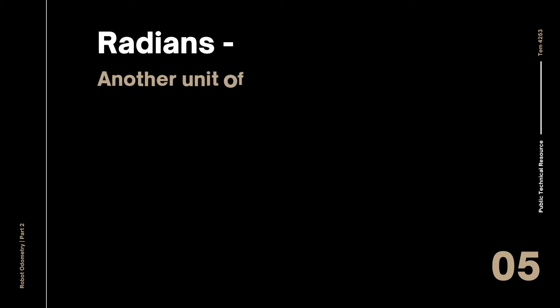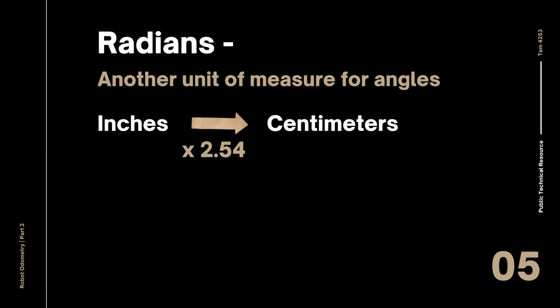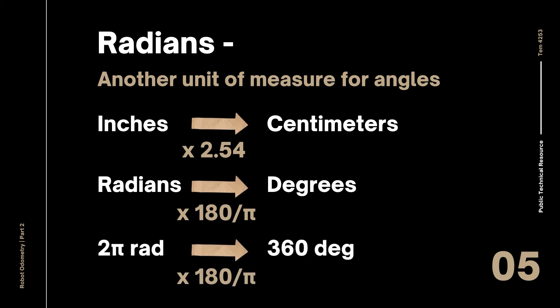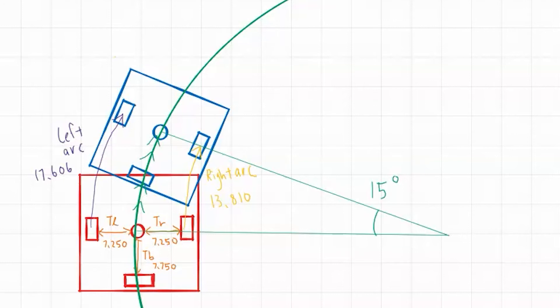In case you're not familiar with radians, it's just another unit of measure for angles, just like degrees. To convert radians to degrees, you multiply by 180 over pi. For example, 2 pi radians times 180 over pi equals 360 degrees — a full circle. Since the native output of the arc length formula is in radians, we'll use radians to measure our angles. All three arcs — left, right, and the main arc — have the same arc angle because they are concentric, meaning they share the same center of the circle. They just have different radii.